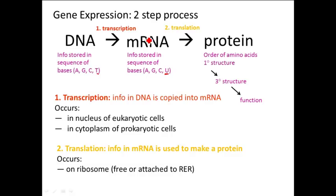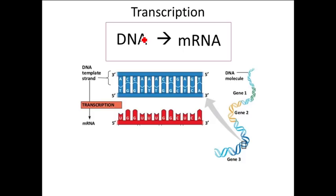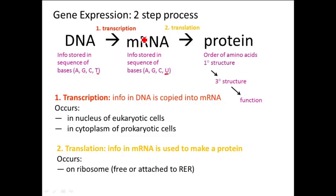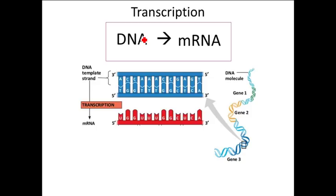Now we're going to go through transcription, and then we're going to go through translation, and at the end I have a video that pulls everything together. These processes can be a little overwhelming, and hopefully going through this and then the video will help you understand it. So transcription is the first step — that's when we go from DNA to mRNA. Here's our DNA, here's our template strand, and here is the mRNA that's going to be made from that.